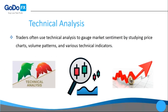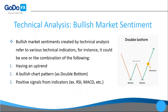The third factor is technical analysis — traders often use technical analysis to gauge market sentiment by studying price charts, volume patterns, and various technical indicators. For instance, a bullish market sentiment based on technical analysis can be created by one or a combination of the following: having an uptrend, having a bullish pattern such as a double bottom as seen on the right, or having positive signals from indicators such as the RSI, MACD, etc. These materials have been covered in our previous courses.